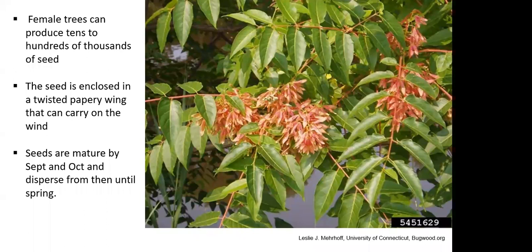Tree of Heaven has both male and female plants. The females can produce tens of thousands to hundreds of thousands of seeds, and actually quite young — in some cases, two- and three-year-old plants have been documented producing significant amounts of seed. That's one of the things that makes this a really problematic invasive species: huge seed production and early seed production. The seed is a small winged structure that holds the seed inside, so it can be wind-borne and travel a significant distance, creating new infestations where there's plenty of sunlight, disturbed soil, and good growing conditions.